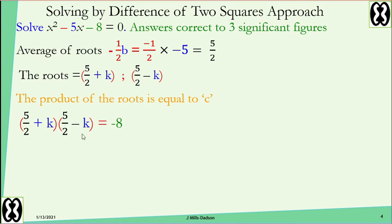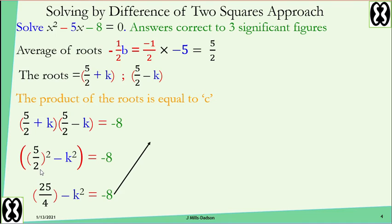Use difference of two squares for the left-hand side: five over two all squared minus k squared equals negative 8. Now solve for k. Five over two all squared gives 25 over 4, so 25 over 4 minus k squared equals negative 8. Add k squared to both sides and add 8 to both sides.